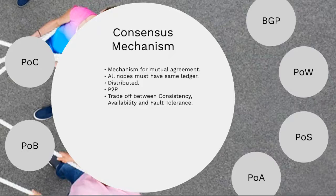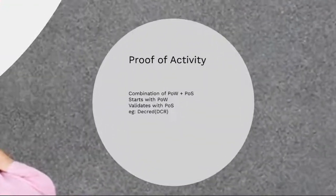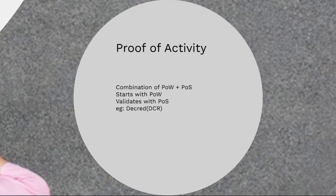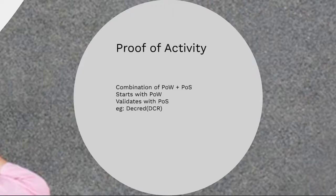Now let us focus on today's agenda — the other three consensus mechanism algorithms. To begin with, we will see proof of activity. Proof of activity is a consensus mechanism algorithm which is a combination of both proof of work and proof of stake. The miners start creating a block using proof of work, and then validation is done by proof of stake.